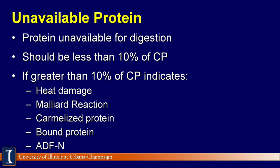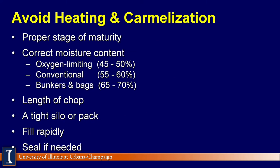Unavailable crude protein may be reported as acid detergent fiber crude protein, unavailable crude protein, or bound crude protein. To avoid caramelization and heating, harvest and store forages properly.